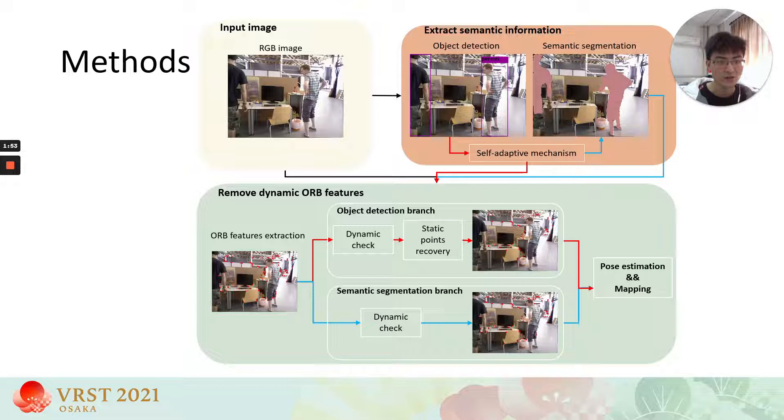Then, geometric constraint techniques are utilized to assist with removing dynamic feature points. The red arrows represent the data flow of the object detection branch, and the blue arrows represent the data flow of the semantic segmentation branch.